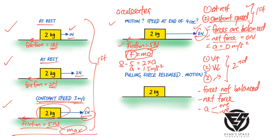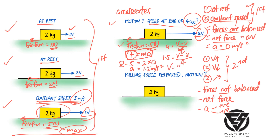To find the speed at the end of 4 seconds: previously, before acceleration began, the box was moving at 3 meters per second — that's the initial speed. Using the formula a = (V − U) / T, with acceleration 1.5, initial speed U = 3, and time T = 4 seconds, solving gives a final speed of 9.0 meters per second.